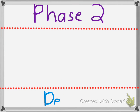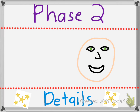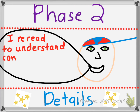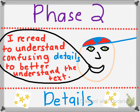Then when we move on to phase two, we're going to look at the details, and we're really going to focus on particular details. As you can see here, we're really going to focus on rereading to understand confusing details to better understand the text. A lot of the time, this is where our pencil is doing lots of annotations, figuring out what we are trying to understand.